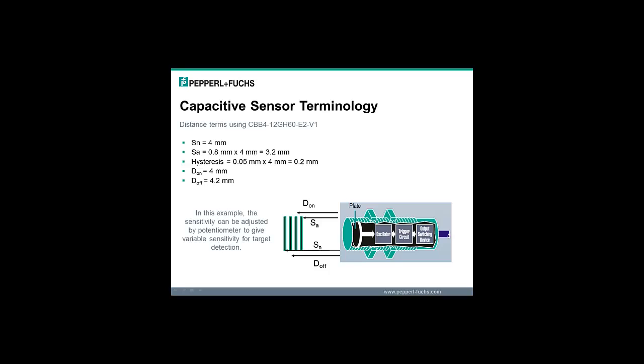Here we see an example of how the sensing definitions apply to a basic capacitive sensor. The CBB4-12GH60-E2-V1 is a standard Pepperel and Fuchs capacitive sensor with a defined sensing range of 4 millimeters. In this case, the standard sensing distance is 4 millimeters, the assured sensing distance is 3.2 millimeters, and the hysteresis is 0.2 millimeters. Since the assured distance is defined based on multiple factors including supply voltage and temperature, it is common to have a sensor that triggers at a distance greater than the assured distance. The assured distance defines the position where a sensor is guaranteed to activate only if the sensor is operated over the complete temperature range.